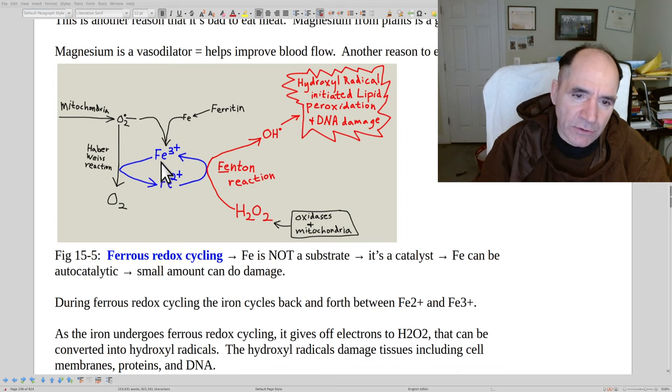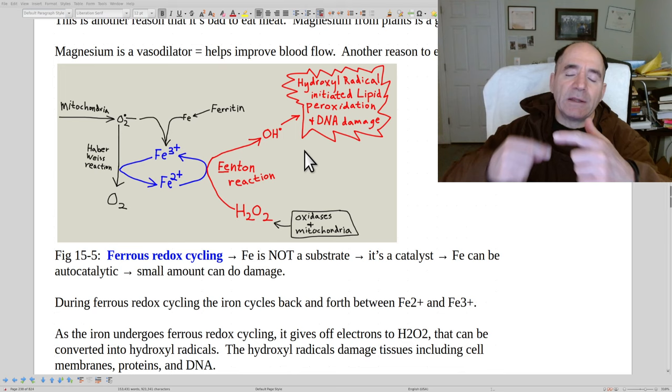Fe is the chemical symbol for iron. So Fe for iron and Fe for Fenton reaction. The Fenton reaction will generate from hydrogen peroxide, it'll generate these hydroxyl radicals. And the hydroxyl radicals can be quite toxic. They can initiate lipid peroxidation chain reactions that will damage membranes. They can also damage DNA.